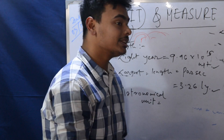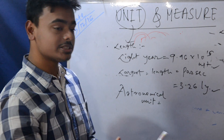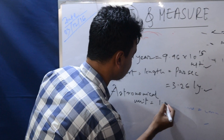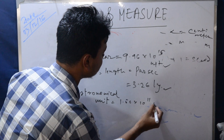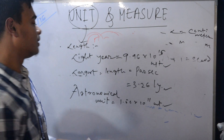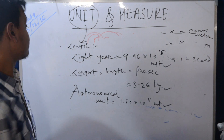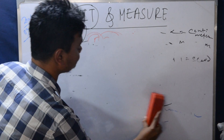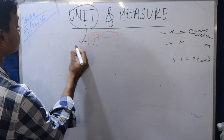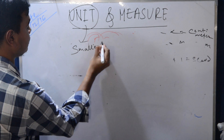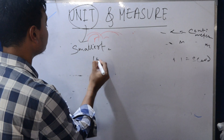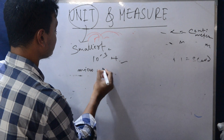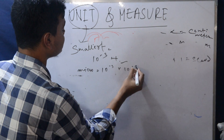The value is approximately 4.25 into 10 to the power 15 meters. Now for smallest lengths: millimeter is 10 to the power minus 3 meters. Next is micron — 10 to the power minus 6 meters.